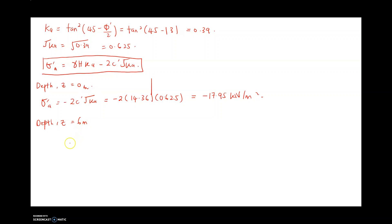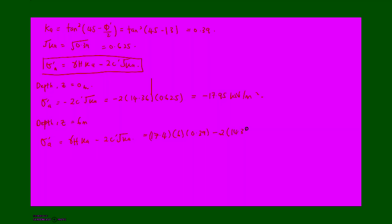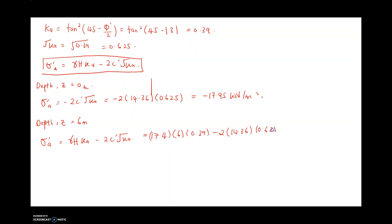At z equal to 6 meters, you calculate sigma_a using the full equation: gamma·h·Ka − 2c·√Ka. So 17.4 × 6 × 0.39 − 2 × 14.36 × 0.625, giving sigma_a equal to 22.77 kN/m² at z equals 6 meters.